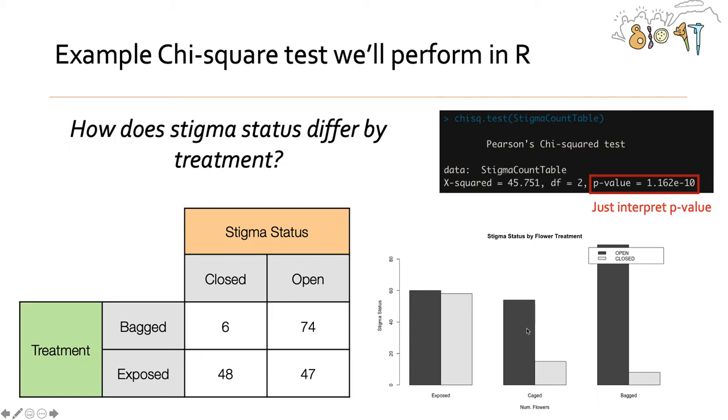There's also a big difference in caged, again, where we have pollinator exclusions, but in the exposed treatments, there's kind of a 50-50 chance that the stigma is open or closed of the ones that we observed.